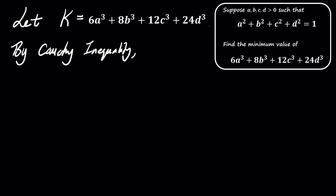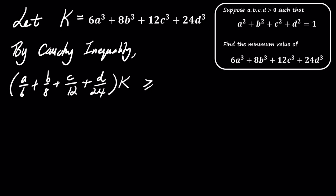By Cauchy-Schwarz, we have the inequality: the quantity (a over 6) plus (b over 8) plus (c over 12) plus (d over 24), times k, is greater than or equal to the square of a squared plus b squared plus c squared plus d squared. Since a squared plus b squared plus c squared plus d squared equals 1, we substitute that into the inequality and simplify.